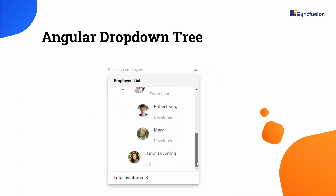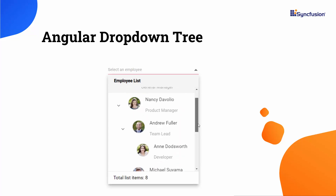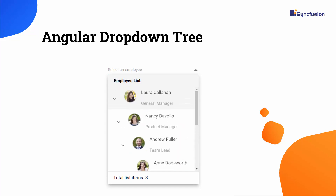Looking at this example, you can see the Angular drop-down tree pop-up showing employee names, designations, and images. You can also see the pop-up with a customized header and footer. Now I will show you the steps to achieve this customization using my existing Angular drop-down tree application.